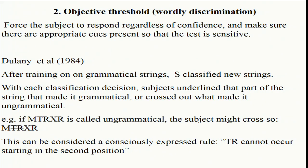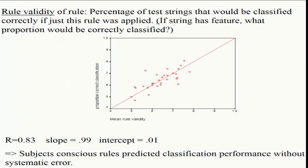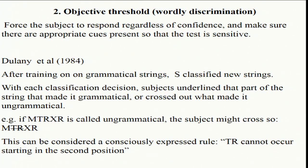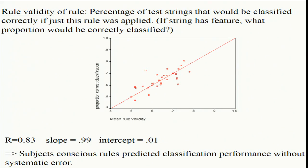So if you underlined TR you'd be saying the string is grammatical and TR at second position is good stuff — that was the rule. Does that make sense? Dulany took these underlinings and crossings to be as good as consciously expressed rules — assertions of general rules that the subject was telling you. In essence we sort of forced it out of them, because maybe they would withhold through free report but couldn't avoid stating a rule here. The act of underlining a part of the string is an assertion — a claim.